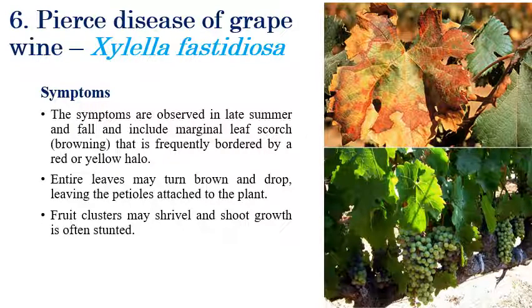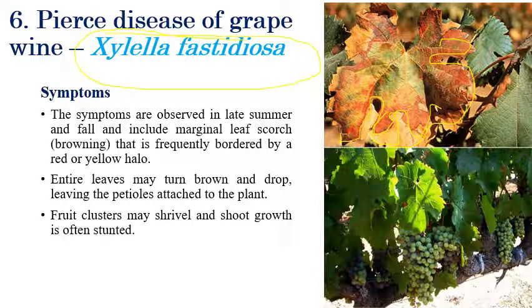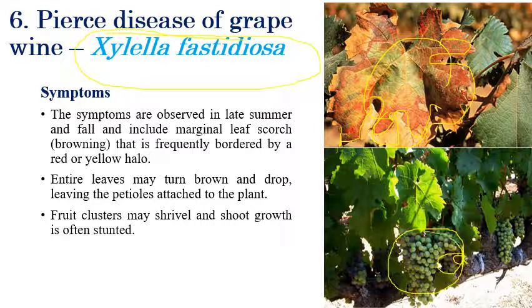Pierce's disease of grapevine is caused by Xylella fastidiosa — a very important bacterial disease. The characteristic symptom is scorching of leaves along with a red or yellow halo border. We can see marginal scorching bordered with a red or yellow halo as the most important symptom. The entire leaf later turns brown; drooping of leaves can also be seen. Shriveling and mummification of fruits can also be observed in advanced stages.